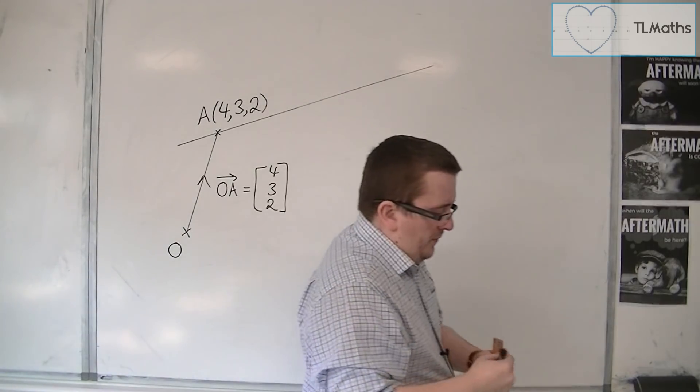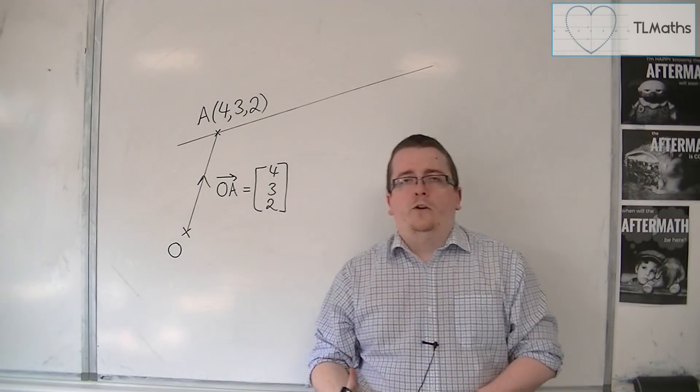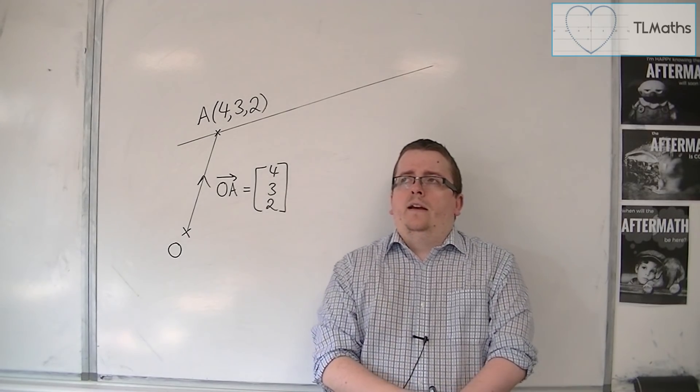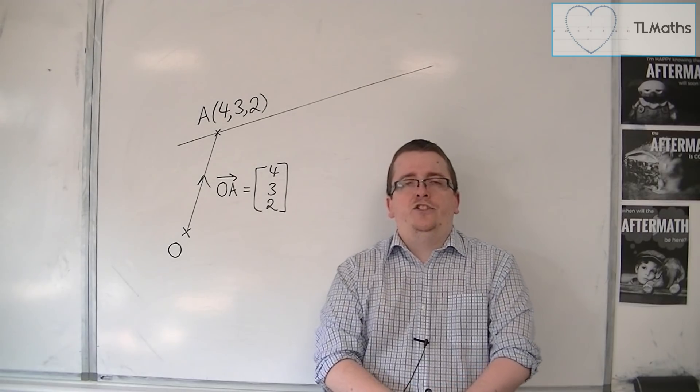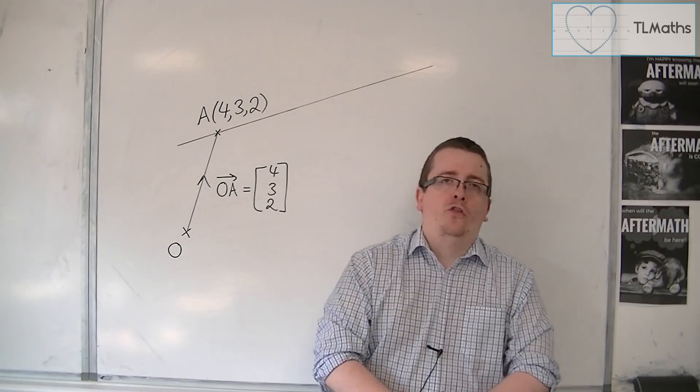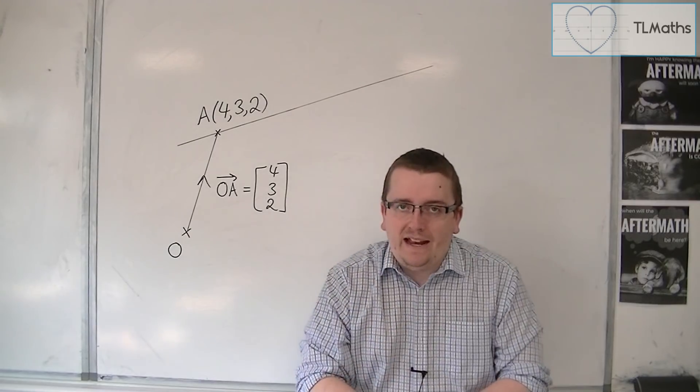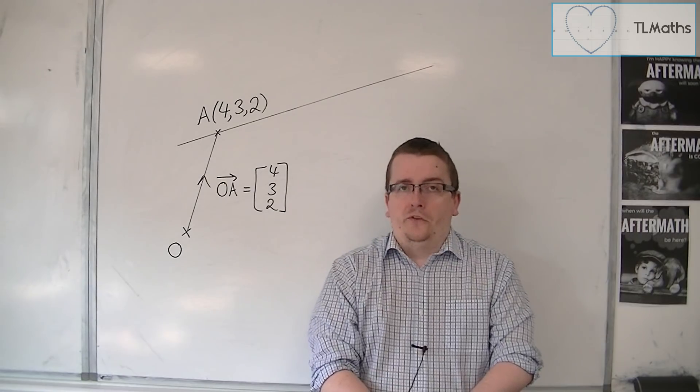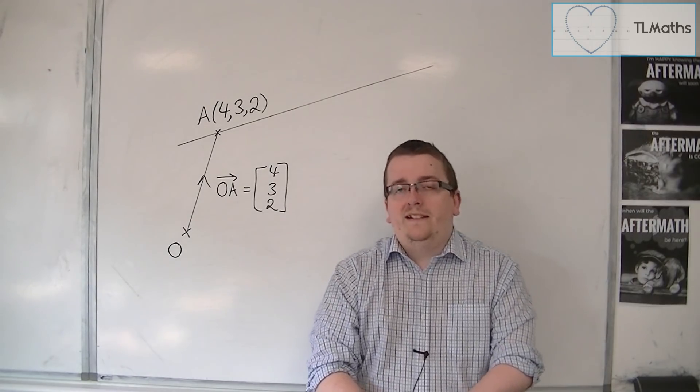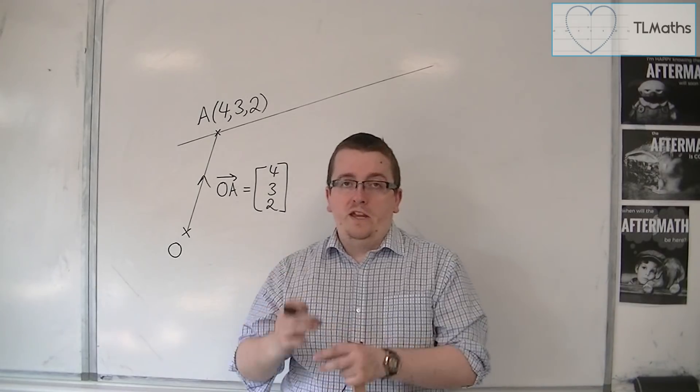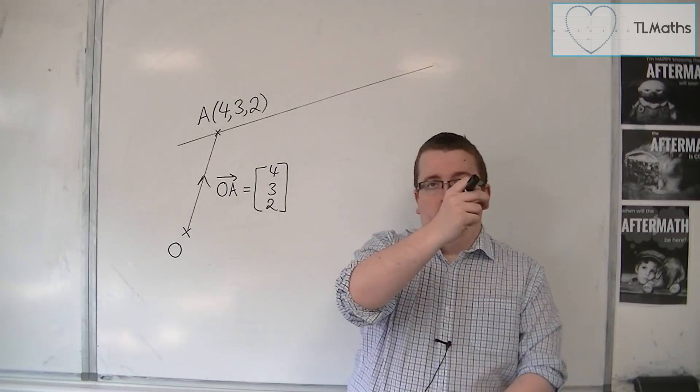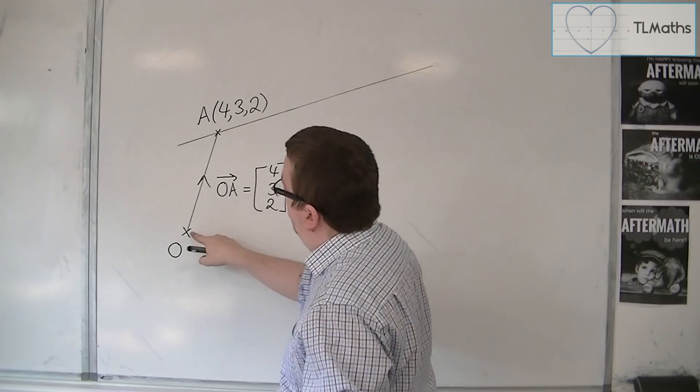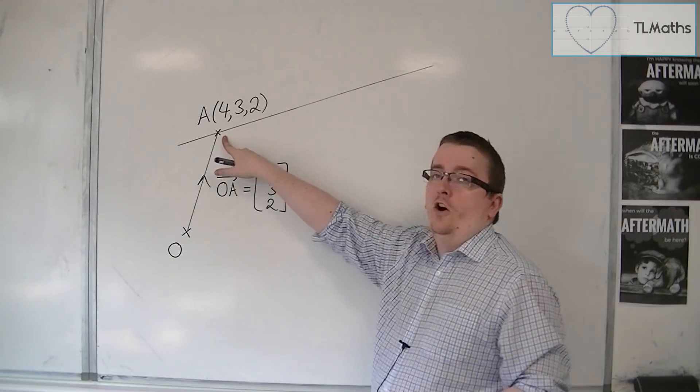So what I can do is think about the vector equation of a line as an instruction of how to get to any point that is on that line. How do I get to any point on that line? Well, if I know a point that is on the line, all I need to do is get from the origin onto the point on the line. So, travel along O to A. If I travel from O to A, that gets me onto the line.